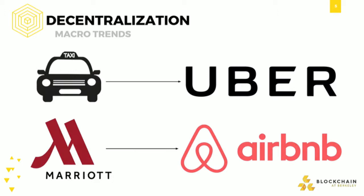So where does Bitcoin come in? We look at the second trend happening in the world right now: decentralization. If we look at some of the biggest companies today such as Uber or Airbnb, we see a large force towards decentralization — opening up industries that were traditionally very centralized and exposing them to market forces. How can we apply this to currency? How can we decentralize in a way that removes central points of failure and increases security in our financial system?